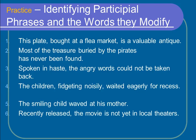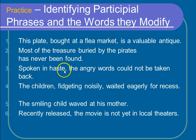Look at number three: 'Spoken in haste, the angry words could not be taken back.' Which words could not be taken back? The ones that were spoken in haste. It answers the 'which' question and I have the added benefit of knowing to stop at the comma. Number four: 'The children fidgeting noisily waited eagerly for recess.' Which children waited eagerly for recess? The ones that were fidgeting noisily. So 'fidgeting noisily' is my participial phrase.